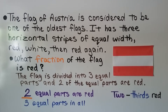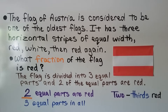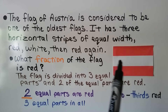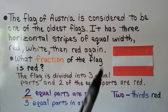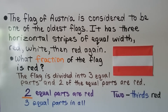The flag of Austria is considered to be one of the oldest flags. It is three horizontal stripes of equal width — red, white, then red again. So, what fraction of the flag is red? Well, the flag is divided into three equal parts, and two of the equal parts are red. Two equal parts are red.